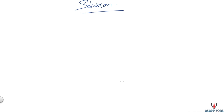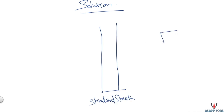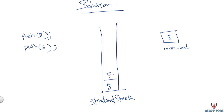Let's approach the solution with basic thinking: is it possible to solve this problem with one single variable holding a minimum value? Assume we have a standard stack and one variable called minValue. We start pushing elements — first eight, which initializes minValue to eight. Then five comes in, we push it, and compare five with minValue. Since five is less than eight, we override minValue with five.